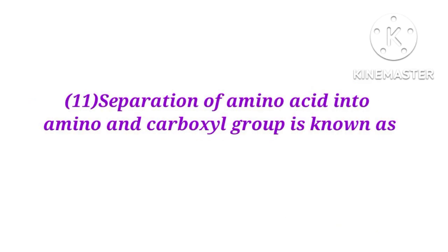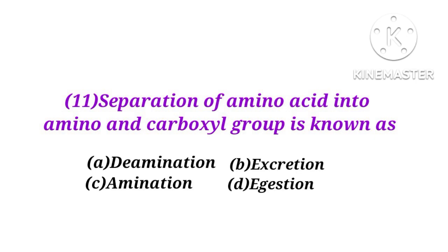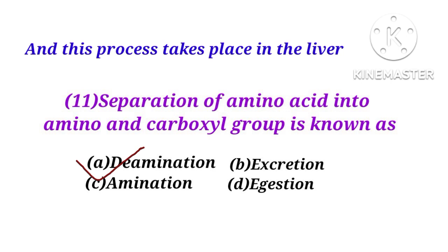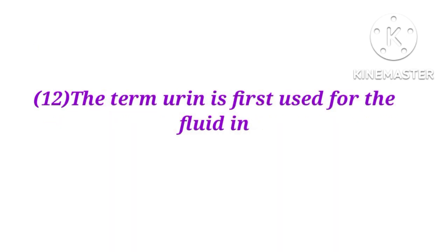Number 11. Separation of an amino acid into amino and carboxyl groups is known as deamination, excretion, amination, or agistration? The answer is A. Deamination is the process by which amino acids are broken down into amino and carboxyl groups, and this process takes place in the liver.